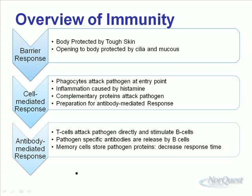In the antibody-mediated response, T cells attack the pathogen directly and stimulate B cells — and these are all lymphocytes. Pathogen-specific antibodies are released by B cells; each pathogen has a specific antibody that latches onto it and helps the body fight it off. Memory cells store pathogen proteins — basically every time a pathogen enters our body, after our white blood cells destroy it, they save little bits of it just in case that pathogen comes back again.